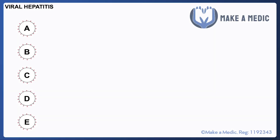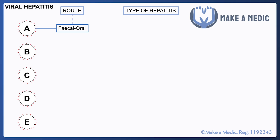Let's have a look at the different types of viral hepatitis. For each of these we're going to talk about the route through which patients can get infected and the type of hepatitis that it causes. Hepatitis A is a relatively common type of viral hepatitis — it spreads through the fecal-oral route and tends to cause an acute hepatitis which in most people will resolve without too many issues.